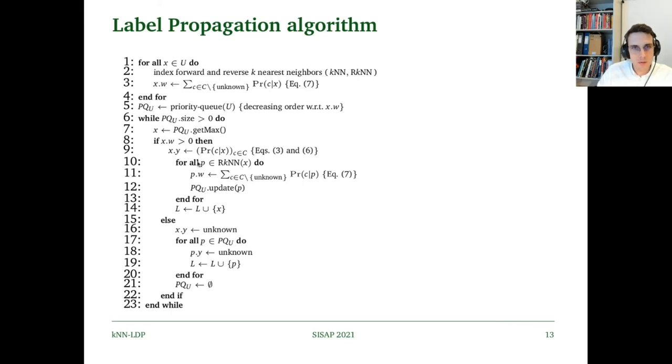Then what we do is we update all of the reverse KNNs' weights, because they just had one of their neighbors receive a label distribution, which means that their neighborhood now has a larger weight than what it did before. Then we update our priority queue and add the point to the now labeled points.